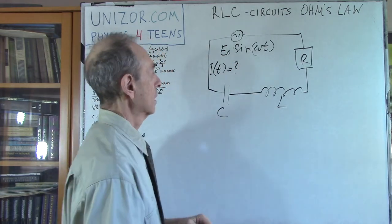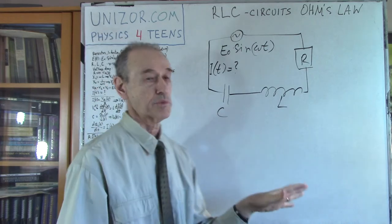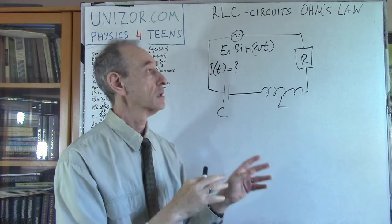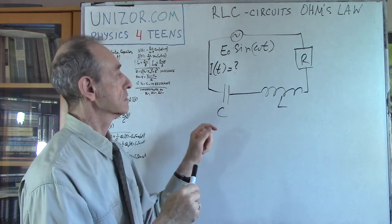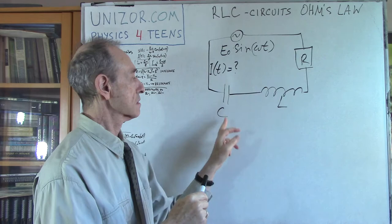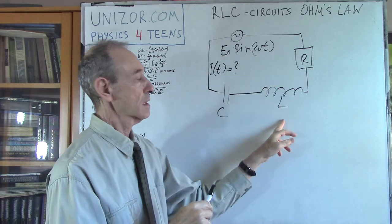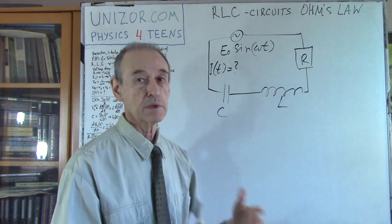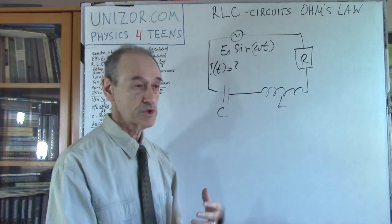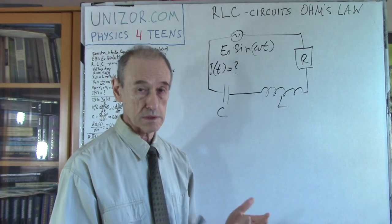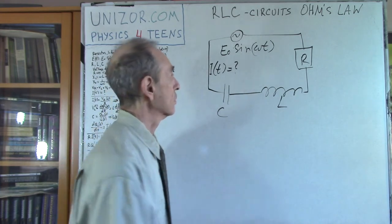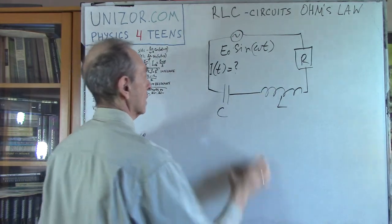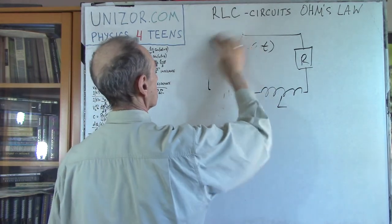I will approach this problem in exactly the same fashion I did for RC and RL circuits — where resistor and capacitor, or resistor and inductor were present. Very similar, the same logic. We will just have a slightly different differential equation as a result, which we will solve.